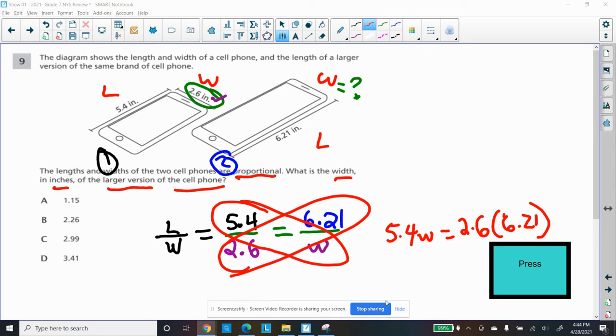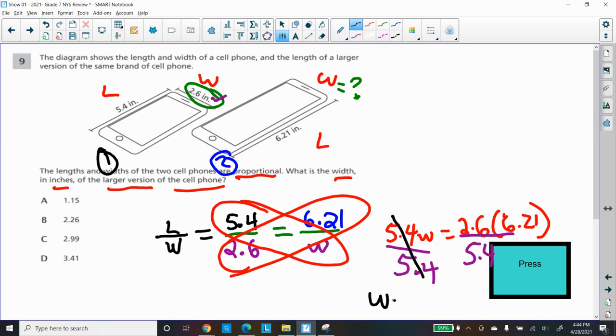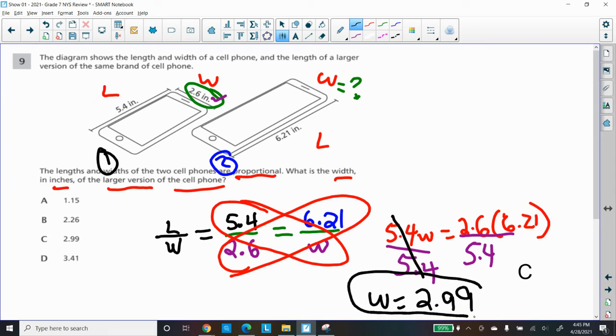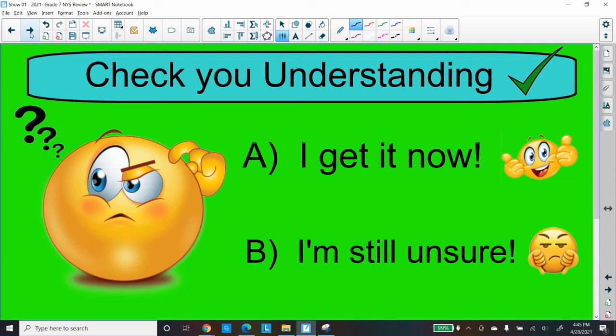I'll divide both sides by 5.4, which will give me what W is equal to. So 2.6 times 6.21 divided by 5.4 will equal 2.99. I get 2.99 choice C. So that's how you would deal with a proportional relationship. If you haven't seen my proportional relationship video, check it out. Hopefully you're understanding what's going on in this video. If not, write down your questions, bring them in tomorrow, and I'll be glad to answer them in class.